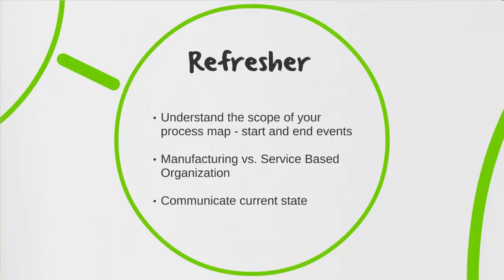In manufacturing organizations, such as an automotive maker, they may receive parts from multiple suppliers, and their role is to transform those physical parts into a vehicle. In a service-based organization, such as a financial services one, they may receive electronic requests or paper statements rather than physical goods. It's important to note these differences, as they may play a factor as you start gathering information.